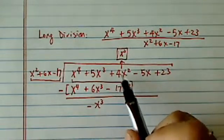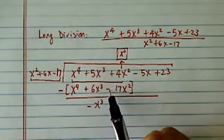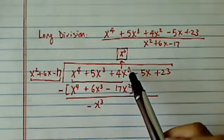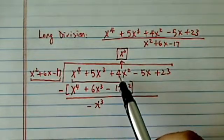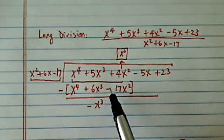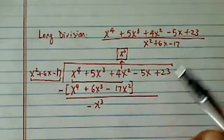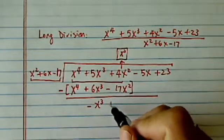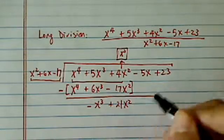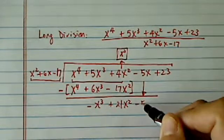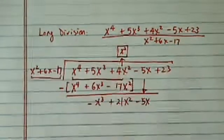Next term, 4x squared minus minus. Now notice how I'm just literally pointing and speak. 4x squared minus minus, which is plus. So 4 plus 17, that should have given me a positive 21x squared. When this term comes down, minus 5x. We're going to do it all over again.